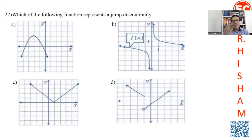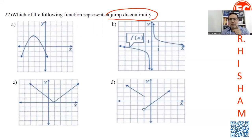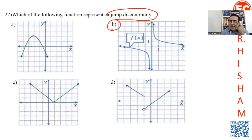Question 22 covers continuity and discontinuity. In one test version he asked about jump discontinuity, in another about infinity discontinuity. We have many types: infinity discontinuity, where the limit approaches infinity from one side and negative infinity from the other — this function is discontinuous at all points.